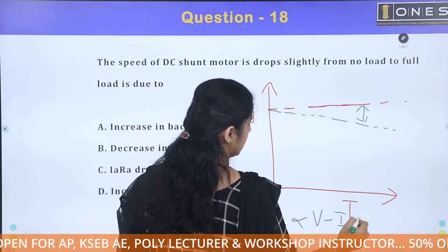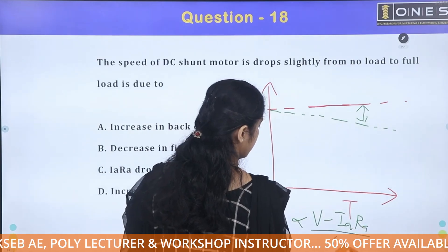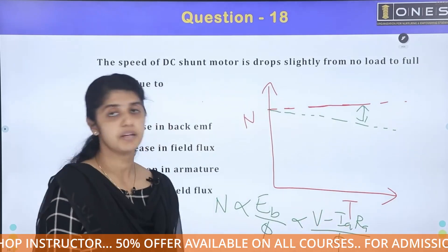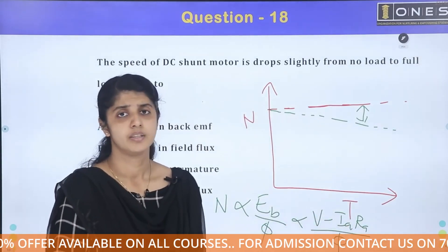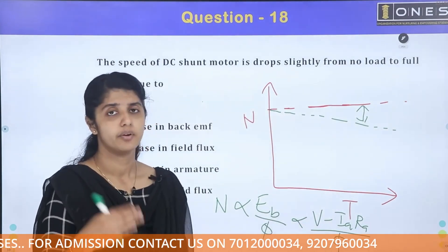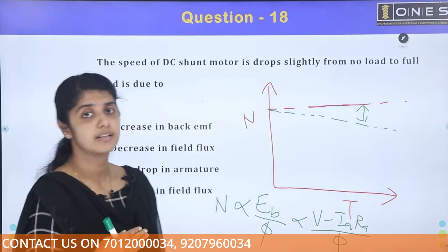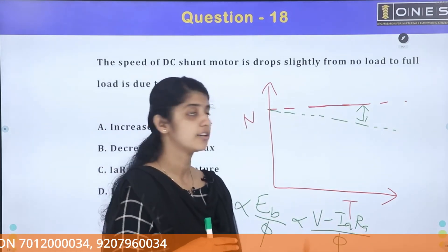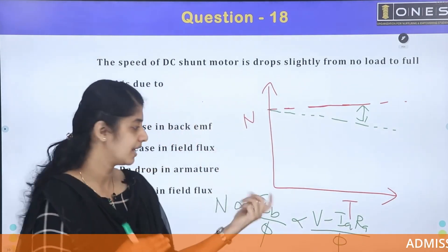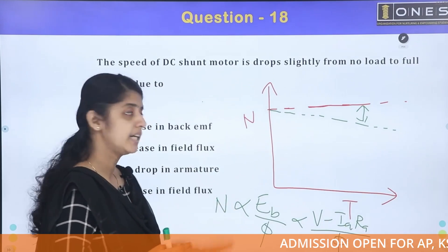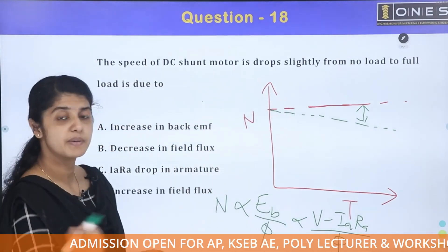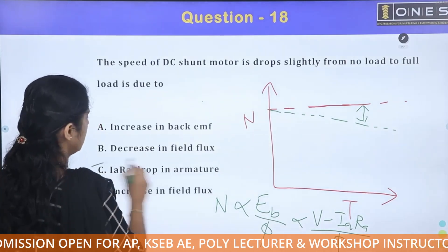In practice, the slight drop in speed from no load to full load in a DC shunt motor is due to the IAR drop in the armature.